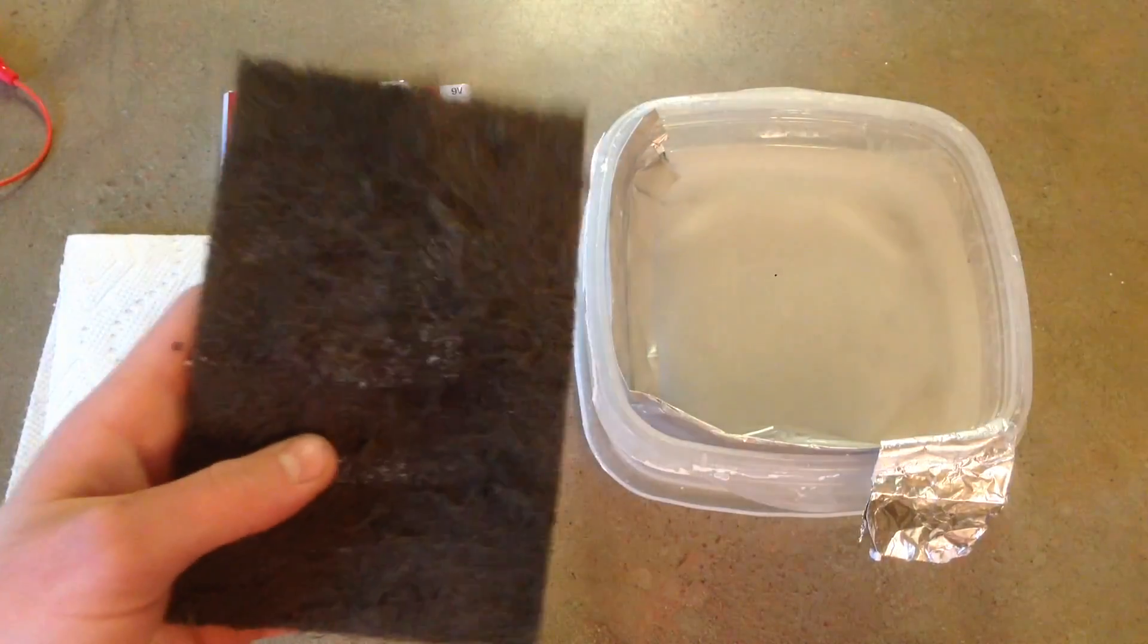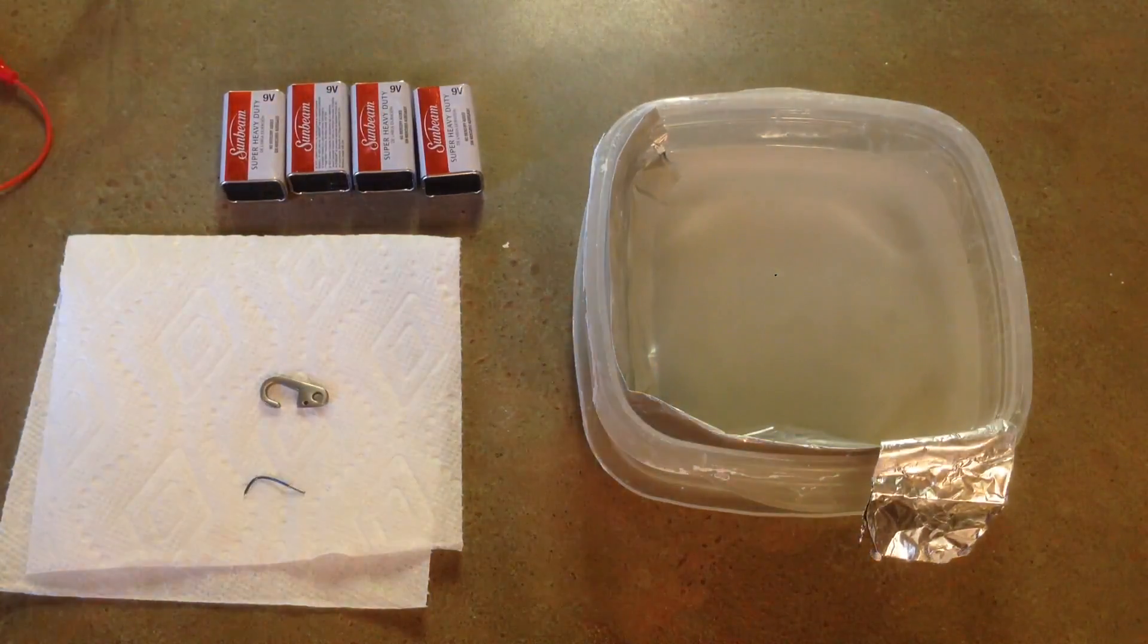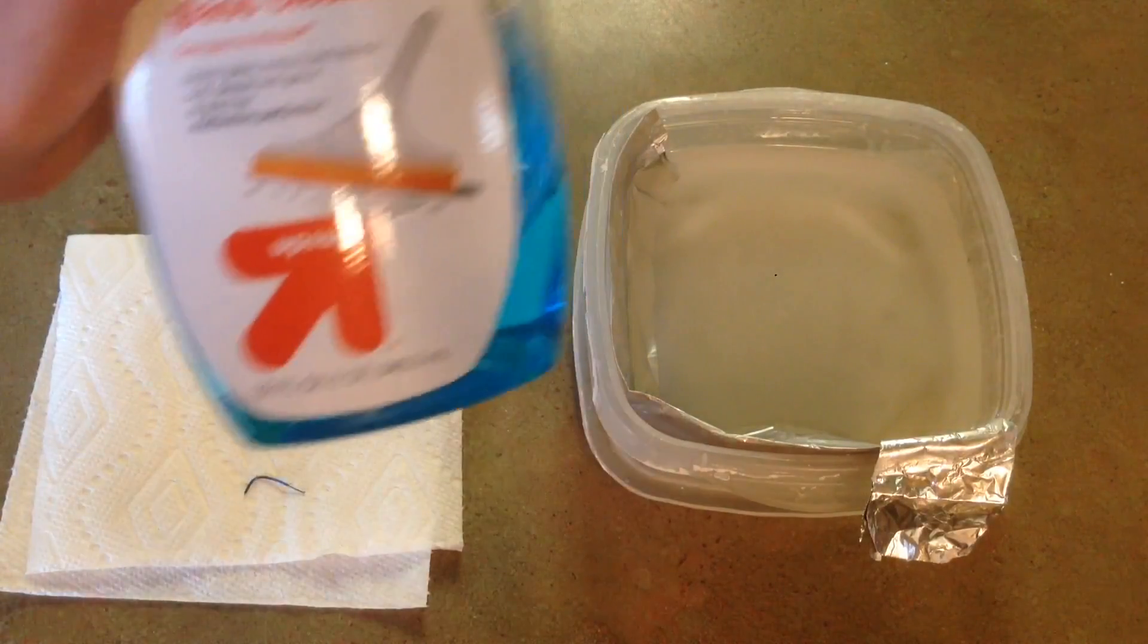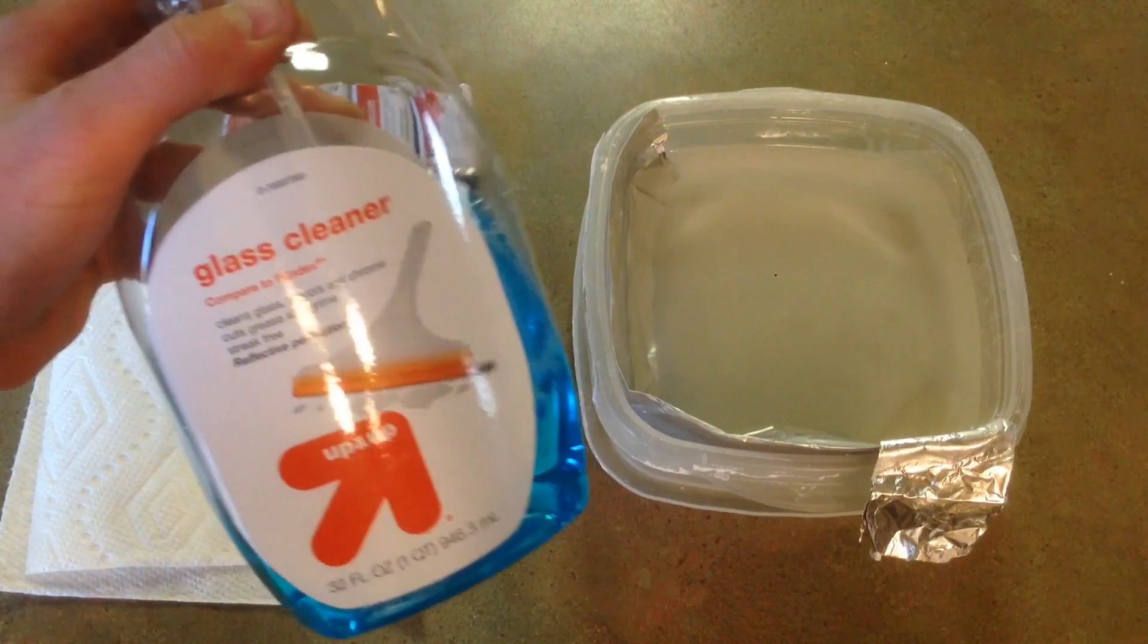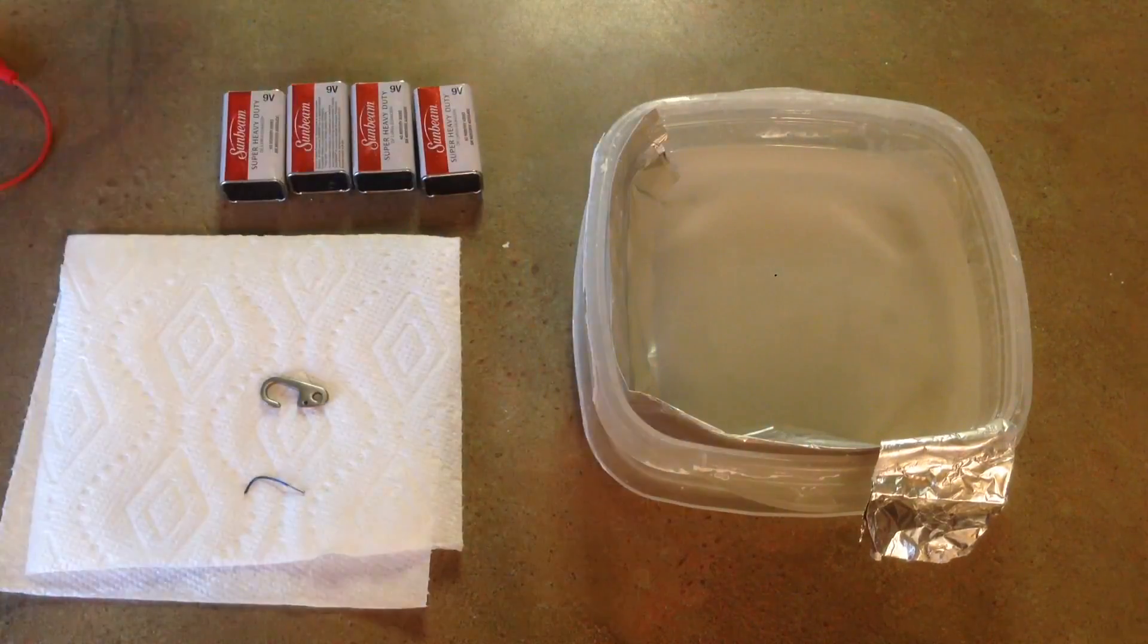To get that off you use Scotch-Brite, sandpaper, or whatever you have, and then you want to clean it off before you anodize. After you anodize you want to clean it off with like Windex or window cleaner or whatnot.